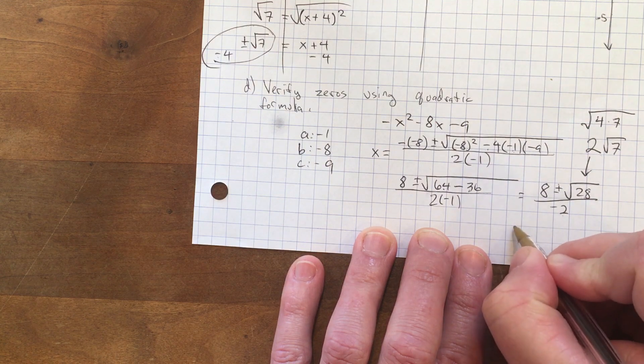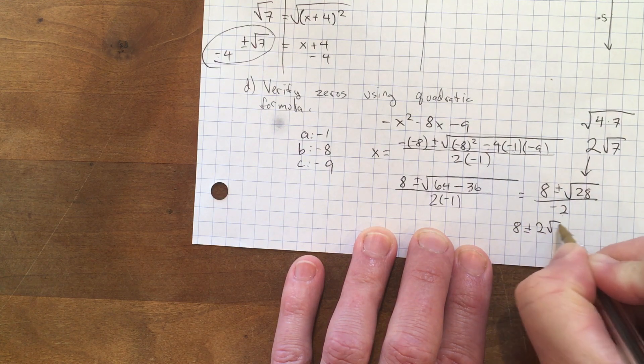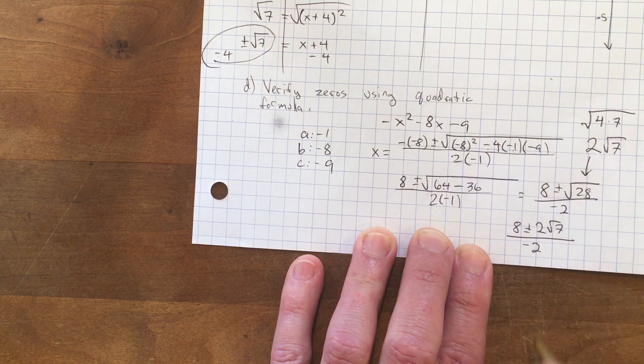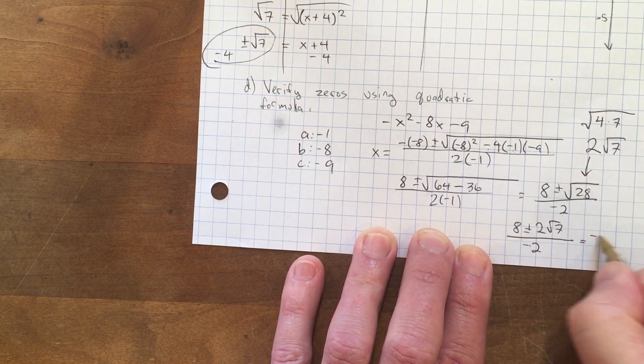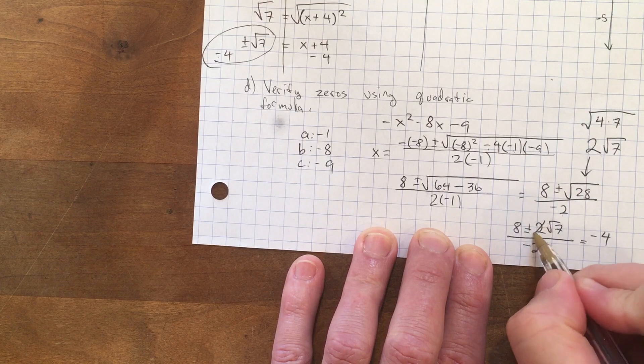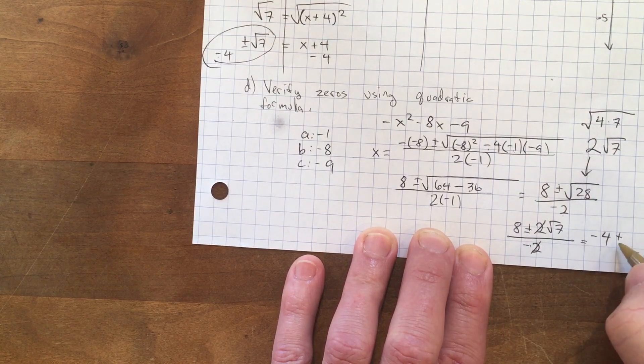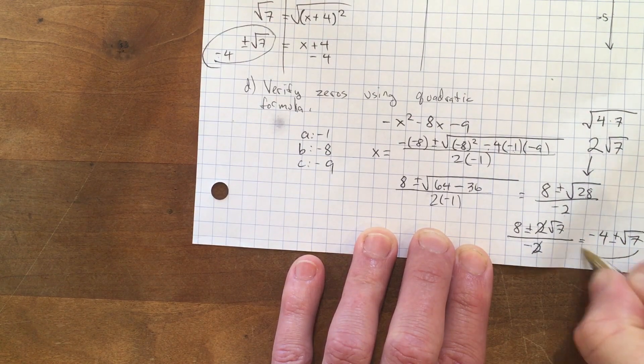Now I can say this is (8 ± 2√7) / -2. 8 divided by -2 is -4, and 2 divided by 2 is 1, so it's -4 ± √7. Oh my gosh, we got the same thing we got otherwise!